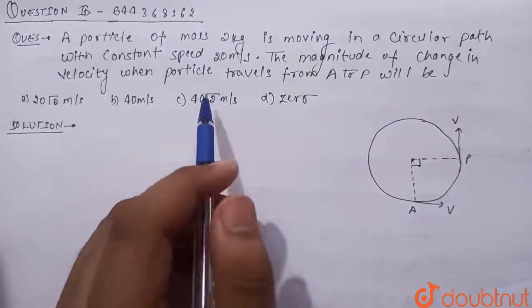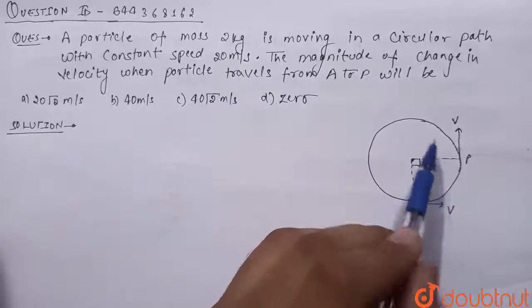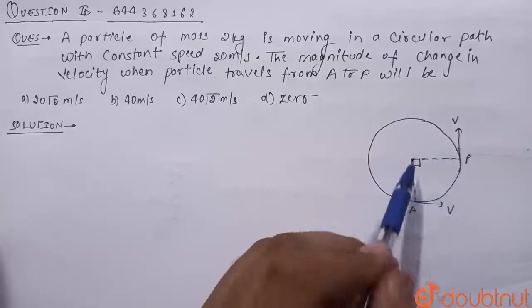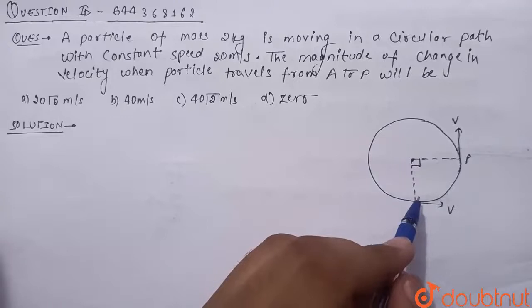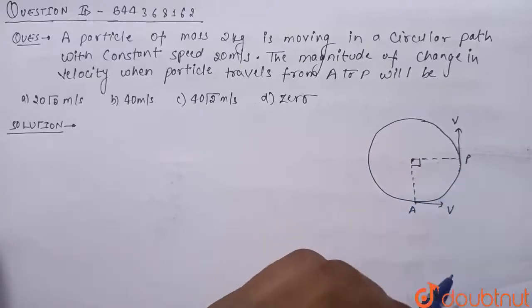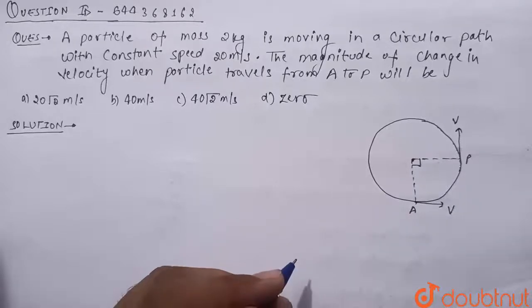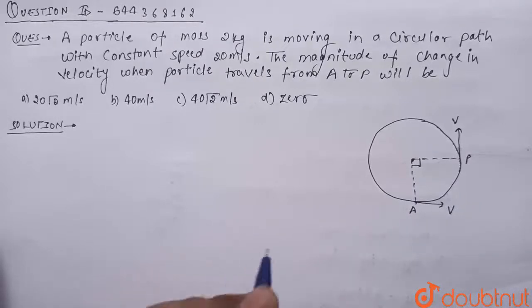So guys, see here in this question we have been given a particle of mass 2 kg which is moving in a circular path. Now we have to find the magnitude of change in velocity when particle travels from point A to point P. So we have to find basically the change in velocity.